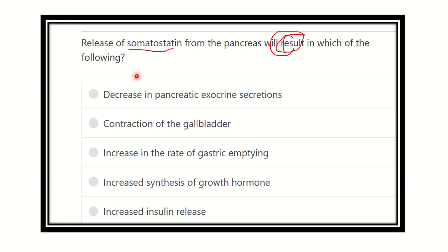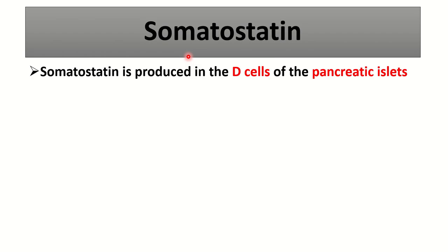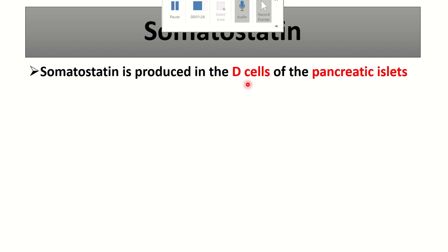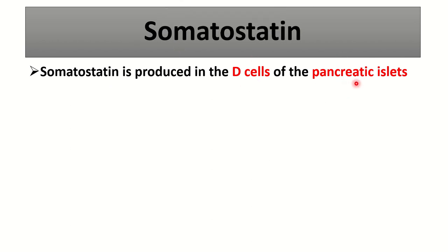First, let's look at the normal physiology of somatostatin. Somatostatin is a chemical product released from the D cells of the pancreatic islets.